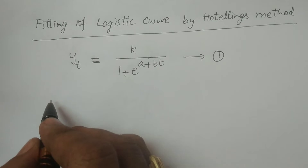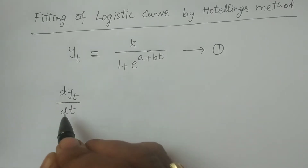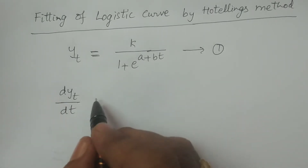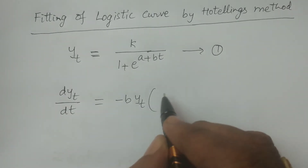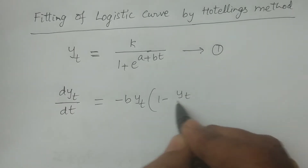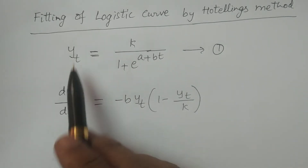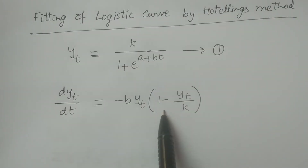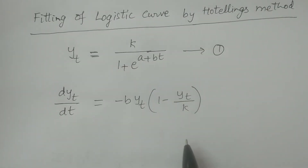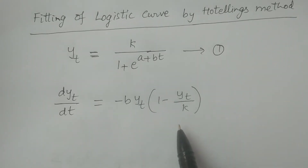What is that property? If you differentiate this, we have d(y_t)/dt equal to minus b times y_t multiplied by (1 minus y_t divided by k). This is the value of the first differentiation of y_t with respect to t. You can refer to the properties of logistic curve and you will get this result.